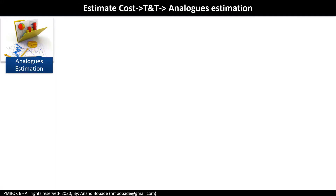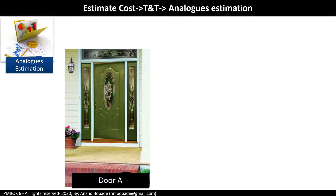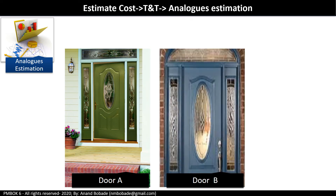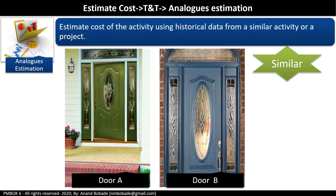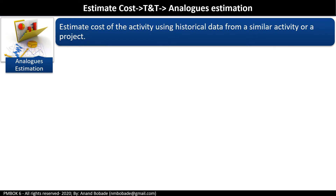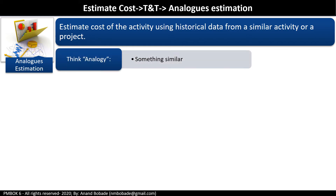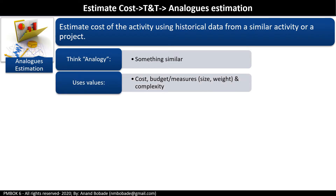Analogous estimation: think of a task to paint a door. A resource who has completed a similar activity in the past is asked to estimate the cost to paint another similar door with a different color. Based on past experience and expert judgment, they will estimate the cost. Through analogous estimation, you estimate the cost of an activity using historical data from a similar activity or project. It uses analogy — something similar — and is applicable to values like cost and budget, or measurements like size, weight, and complexity.